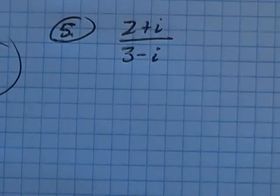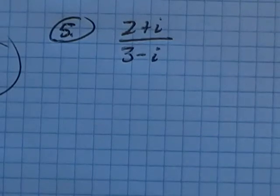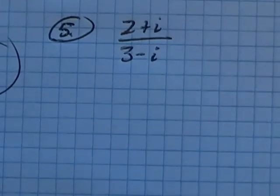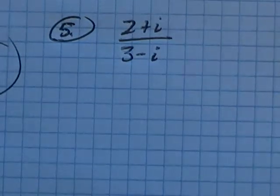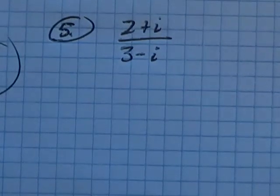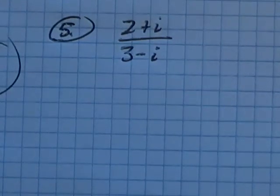This is Math 98, the final practice. This is problem number five, where we are supposed to simplify. In order to simplify this, I have an i in the denominator. I need to get rid of it; it needs to not be in the denominator.